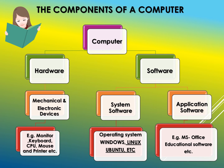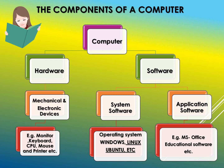Software consists of programs. Software is of two types: system software and application software. These programs are stored in the memory and storage devices. Examples of operating systems are Windows, Linux, and Ubuntu. Examples of application software are MS Office and educational software.